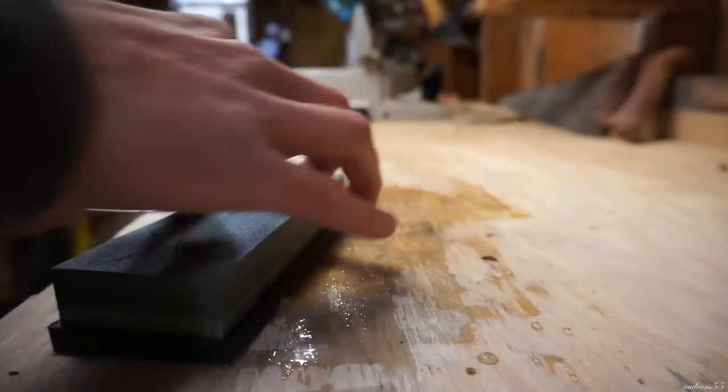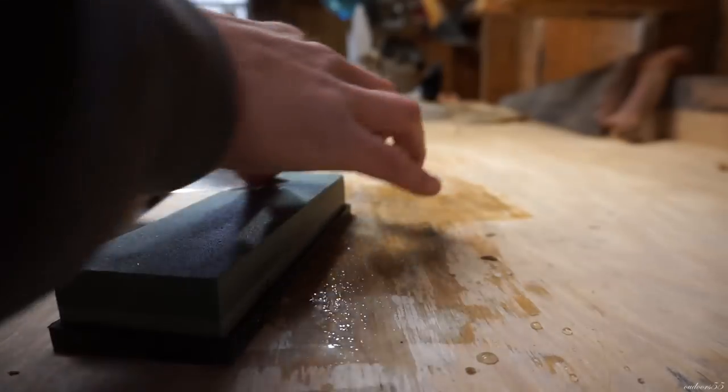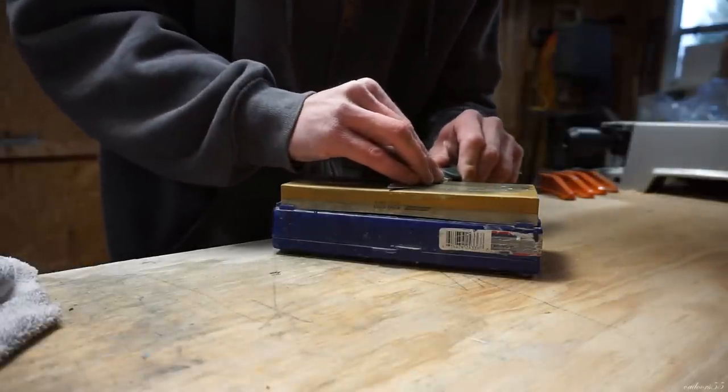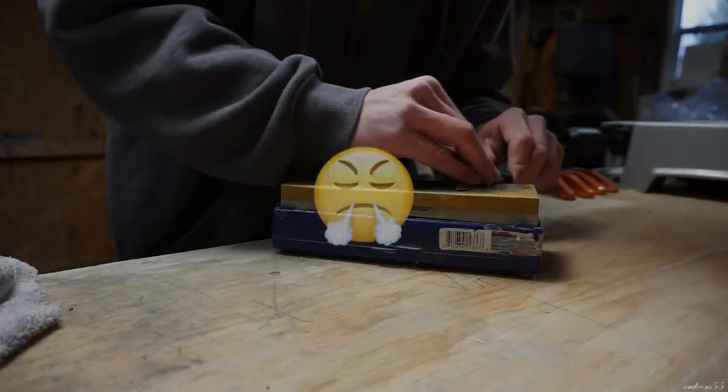The most important thing when you're reprofiling is to maintain your angle. Constantly checking to make sure that the bevels on both sides of the knife are even and that you fully apex right in the middle of the blade. I always apex on my coarsest stone. It's really a pain in the butt once you get to the 8,000 grit stone and realize that you haven't apexed. That means that you have to go all the way back and start over again.